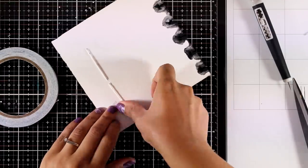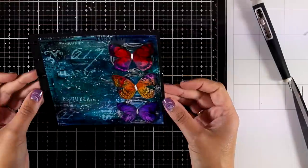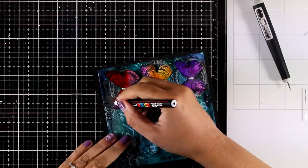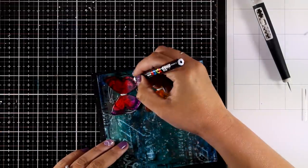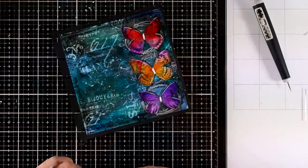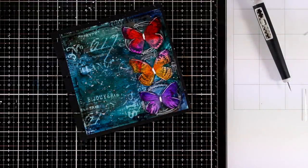To make sure that this string is not going to go anywhere I added some tape at the back. Now I'm going to use my white Posca pen and add some highlighting on the butterflies.